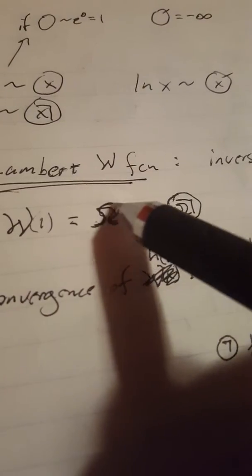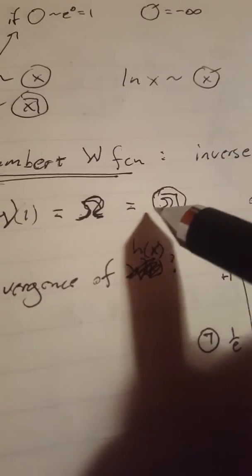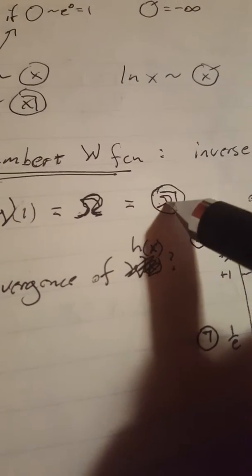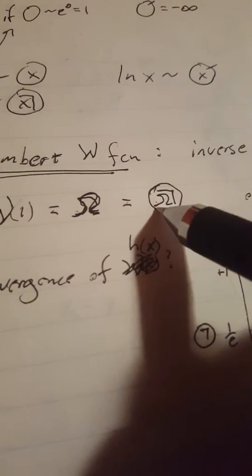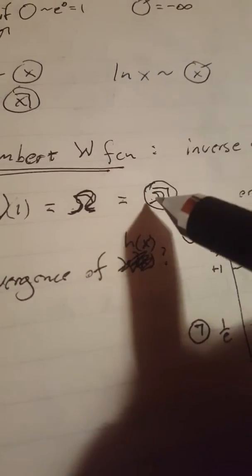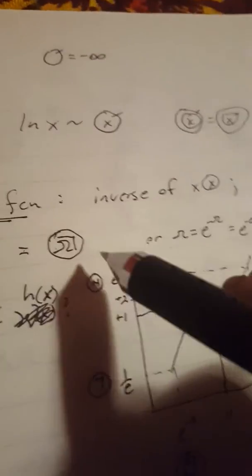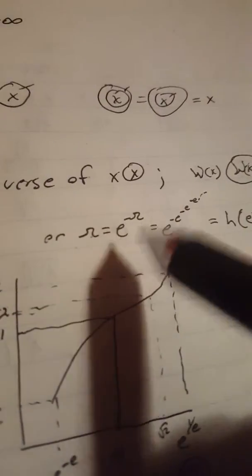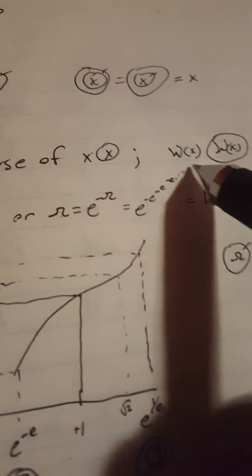This omega constant can be defined recursively as e to the minus omega equals omega. So you can think of it as telescoping infinitely. And we normally represent it like this, or like this.